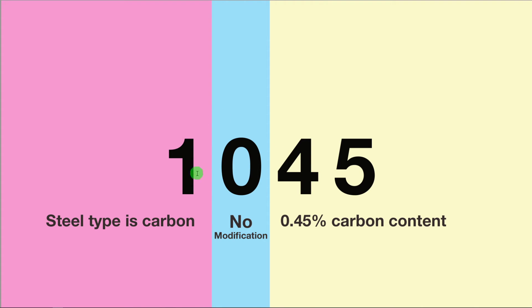Once you understand this four-digit system, it becomes very simple to look through a large list of different materials and choose the material you need based on the parameters you're looking for. The type of material is the first number, the last two digits are the carbon content, and the second digit tells you what modification has been made — so you get a great amount of information right from the get go. I hope you got a lot of value out of this video; let me know in the comments if you want to see any sort of video in the future.